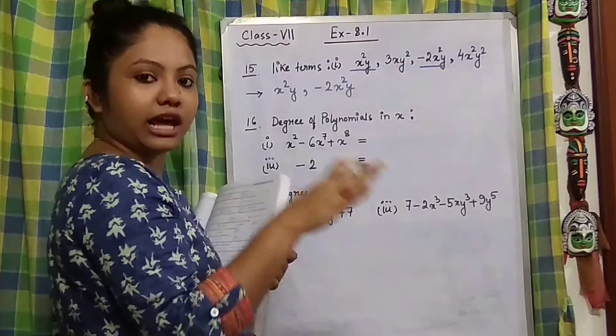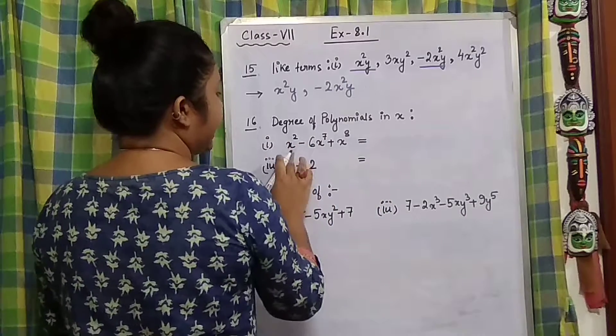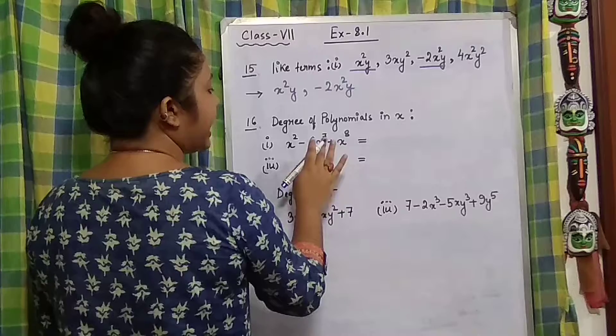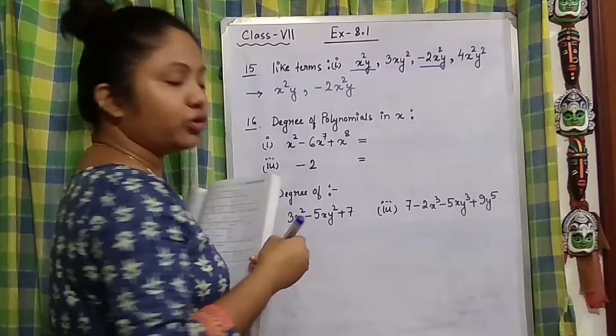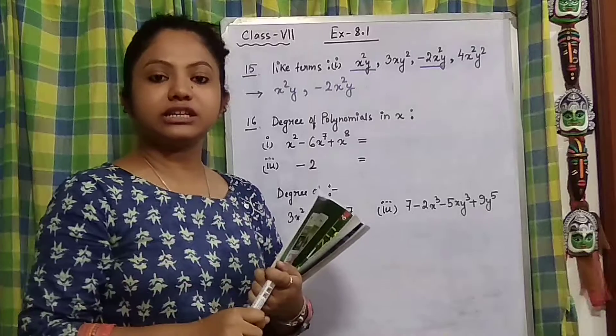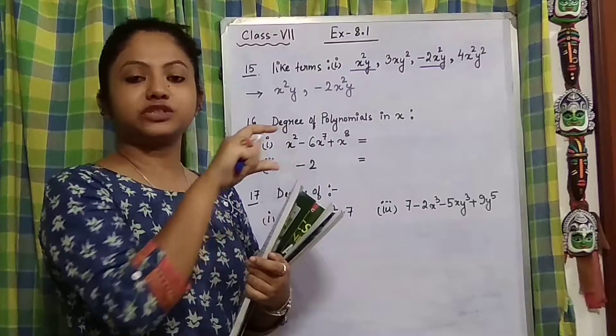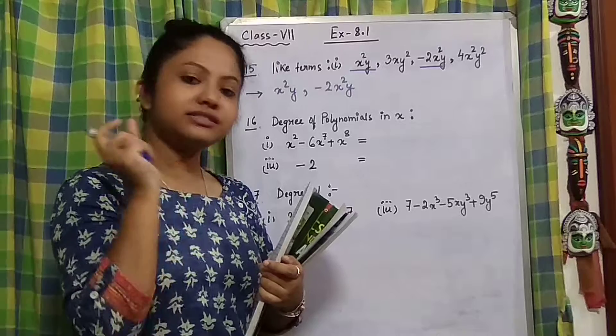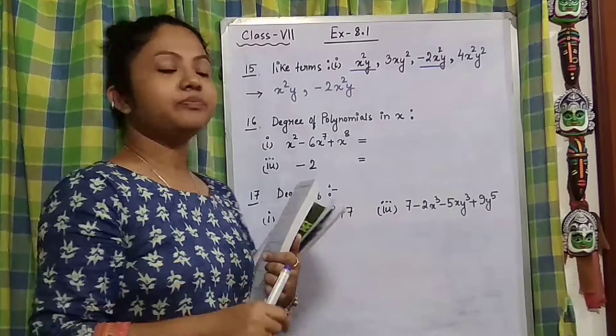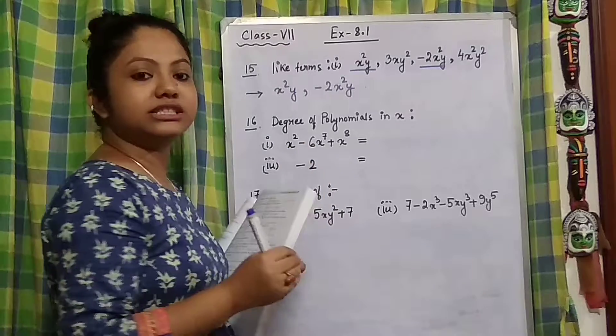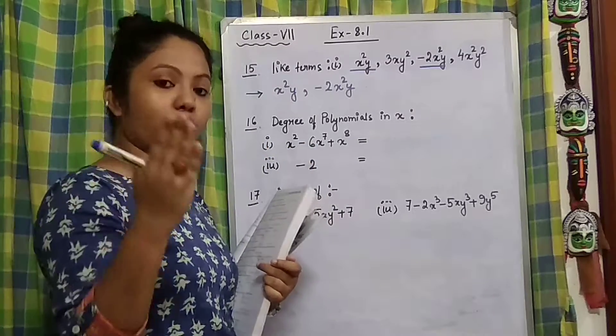So here, see problem number 1: x² - 6x⁷ + x⁸. If you remember, we already discussed that when the variables in an algebraic expression are similar or the same, we consider the variable with the highest power.